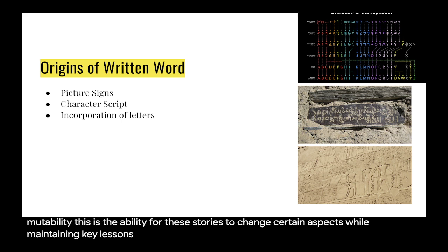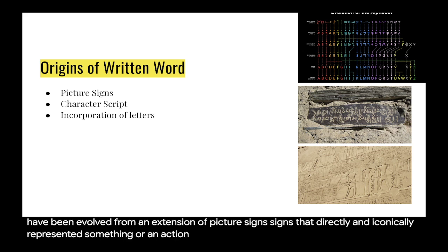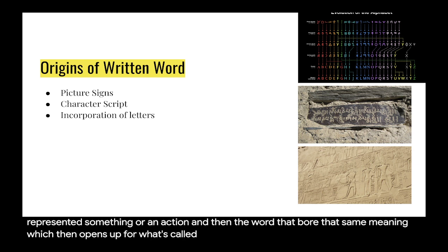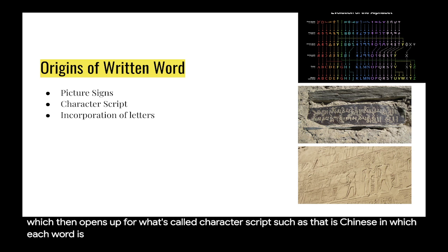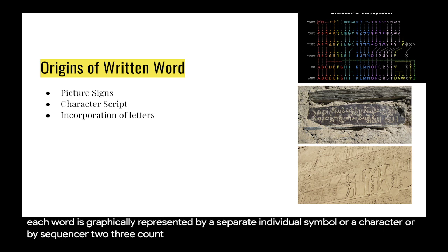Here we have origins of the written word. Writings appear to have evolved from an extension of picture signs — signs that directly and iconically represented something or an action and then the word that bore that same meaning. Writing then opened up for what's called character script, such as Chinese, in which each word is graphically represented by a separate individual symbol or character, or by a sequence of two or three characters.